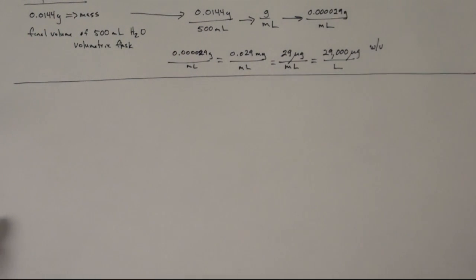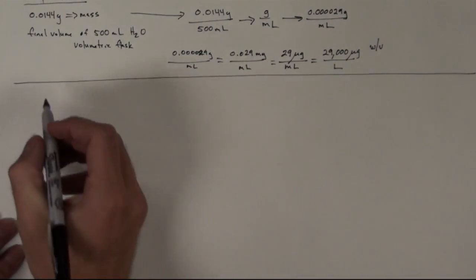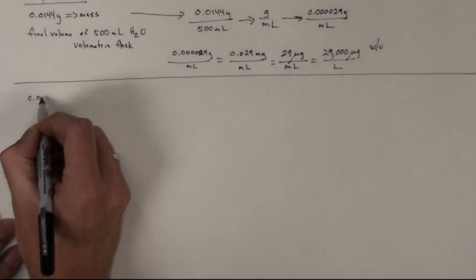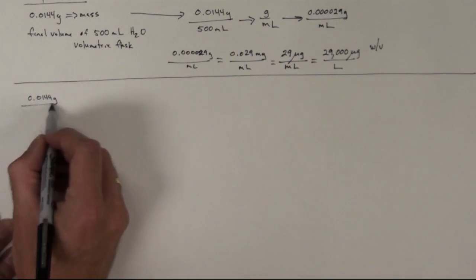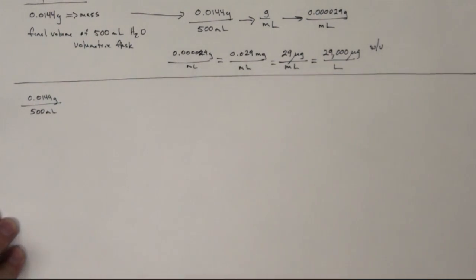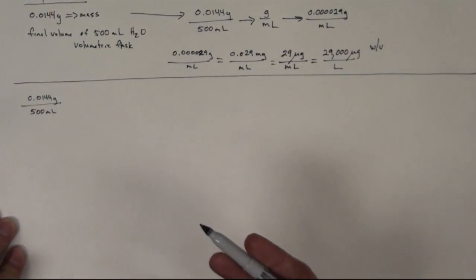Using the same information, we can now also refer to things in percentages. So once again we have 0.0144 grams of bromophenol blue and we had a final volume of 500 milliliters. So we can refer to this in a concentration, but a concentration referring to percentages.